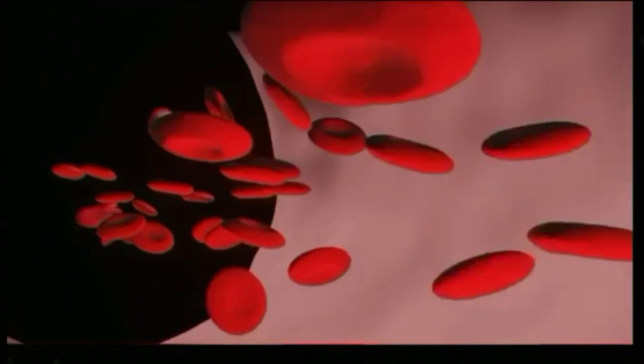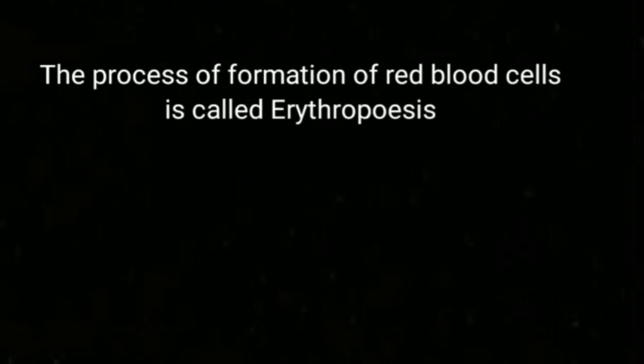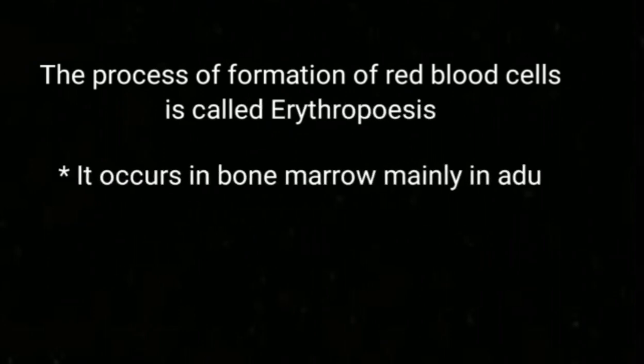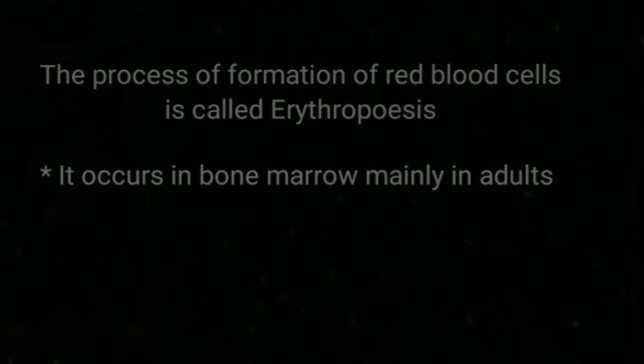Do you know the birth of red blood cells? The process of formation of red blood cells is called erythropoiesis. It occurs in bone marrow, mainly in adults.